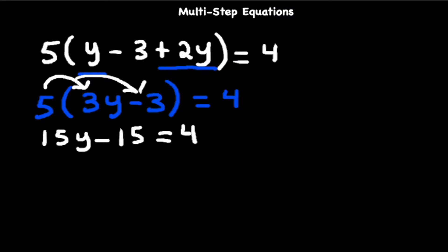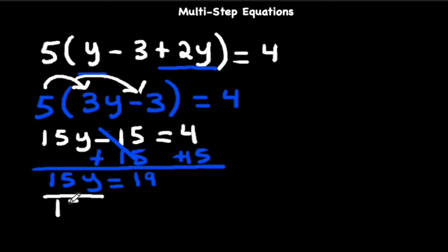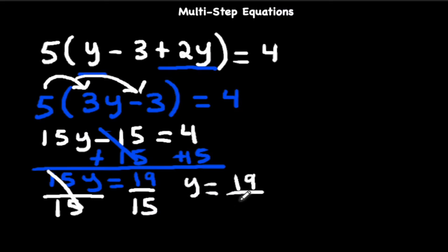We already have y on one side, so all we need to do is manipulate the numbers. Let's move minus 15 by adding 15 to both sides. We're left with 15y equals 4 plus 15, which is 19. Dividing both sides by 15, the 15s cancel, leaving y equals 19 fifteenths as an improper fraction, or 1 and 4 fifteenths as a mixed number.